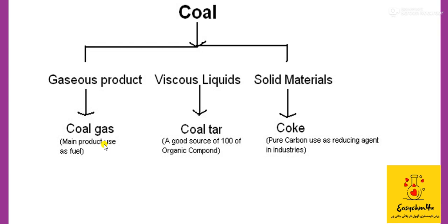Coal gas we will use as obtained. Coke we will also use as obtained. But coal tar further undergoes a process that is called fractional distillation, and it gives us hundreds of useful organic compounds.